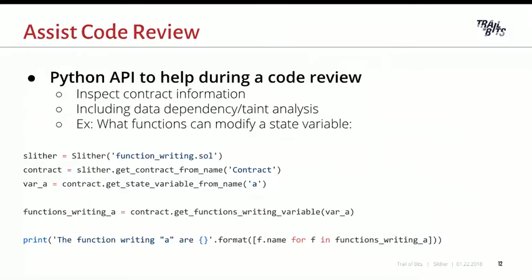Additionally, the framework is built as a library, so you have a full Python API to access all information from Slither and build any kind of tool or script. For example, if you know that inside your codebase some specific variables should never be controlled by the user, you can check this in a few lines of code. You can print what functions can modify a state variable, and so on. If you have custom properties you want to check on your codebase, you can use the API to do it.